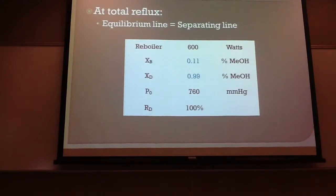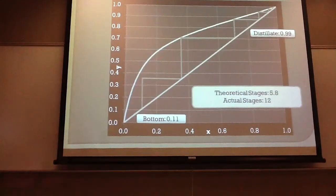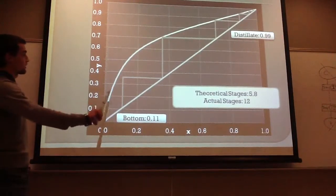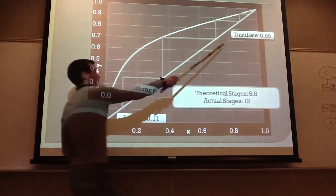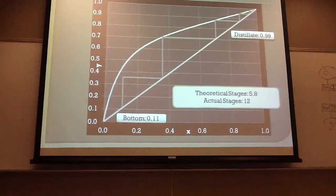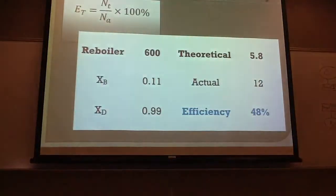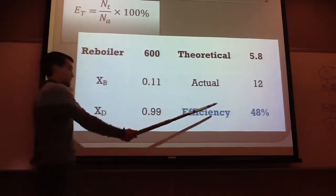We used those values to construct the McCabe-Thiel diagram. With total reflux on a McCabe-Thiel diagram, you don't have a feed line or separate rectifying and stripping lines — you just step off your stages between the operating line and the equilibrium line. We used the Van Laar model from our distillation class, which found our theoretical stages to be 5.8. The actual stages in the column were 12, so tray efficiency is 5.8 divided by 12 times 100%, giving us 48% efficiency.